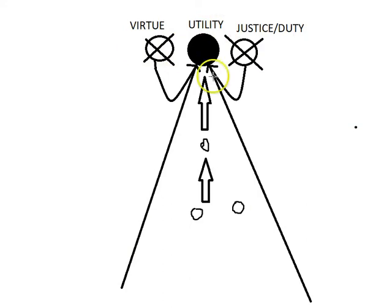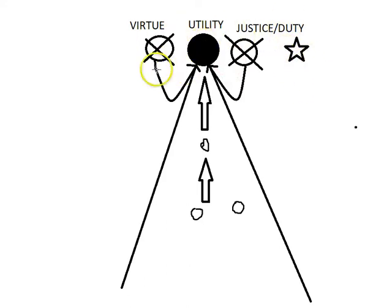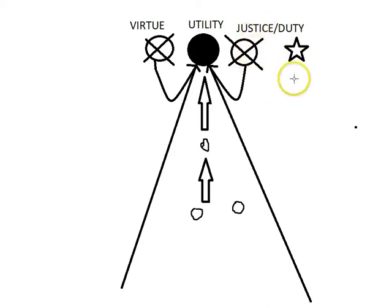There are two major opponents: virtue and justice. Mill gives special attention to justice and duty, calling it the real threat to utility, devoting all of chapter five to it. He thinks the argument against virtue as an ultimate moral concern is more straightforward. The strategy for both is the same — so let's do virtue first, then see how the same basic story applies to justice.